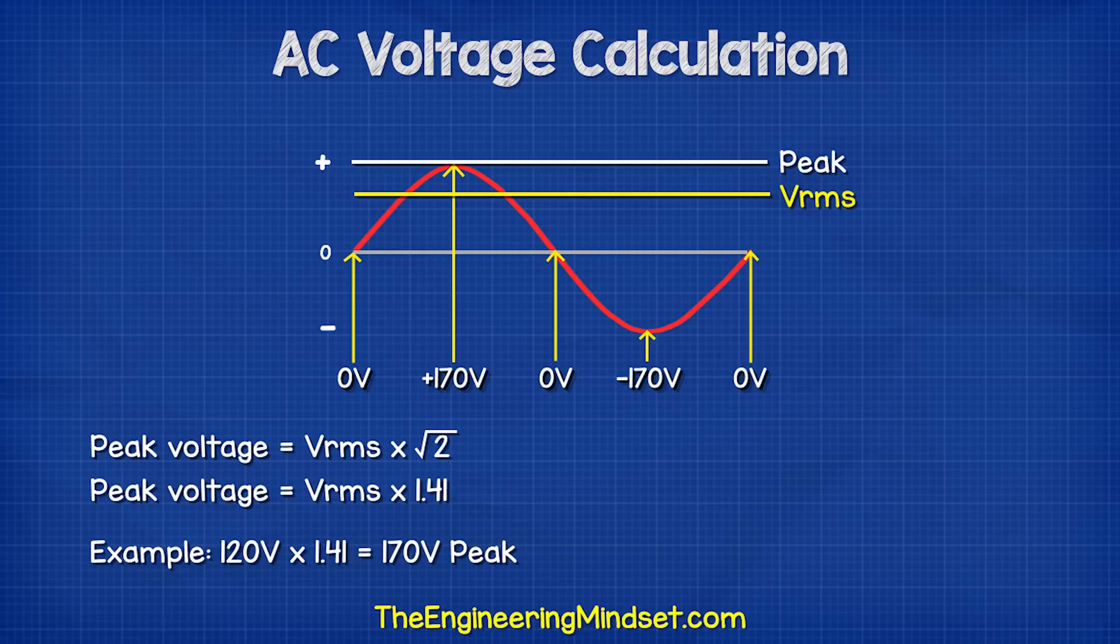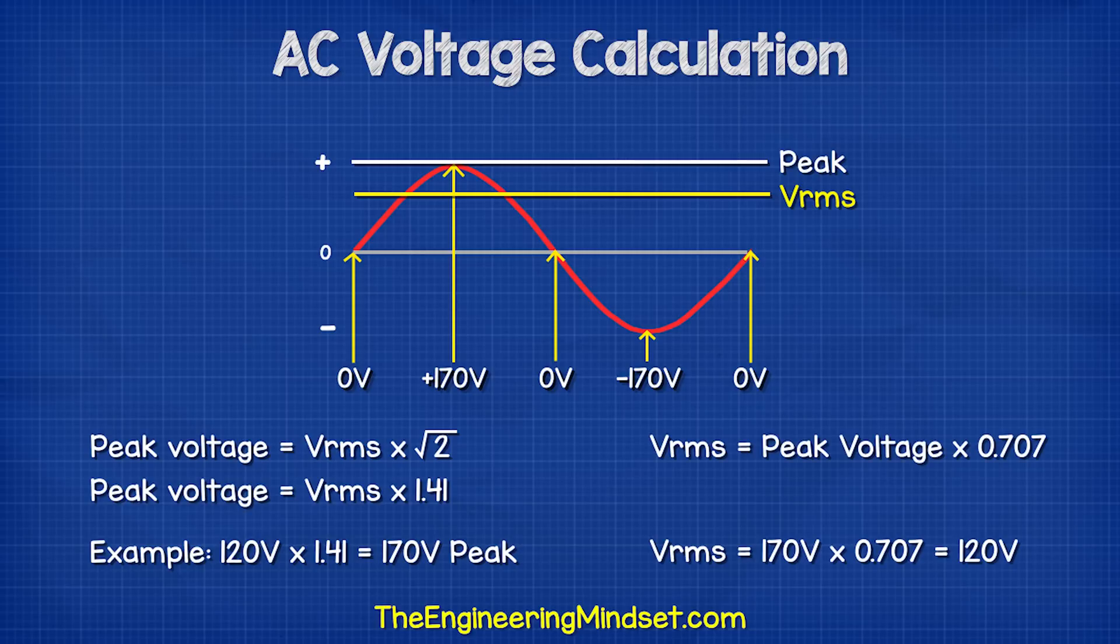To find the peak voltage, we multiply the root mean squared voltage by the square root of 2, which is roughly 1.41. To find the RMS voltage, we divide the peak voltage by 0.707.